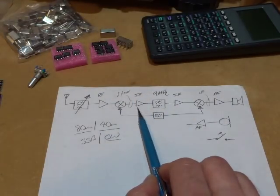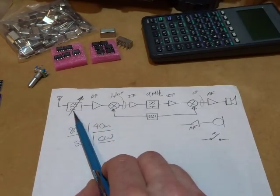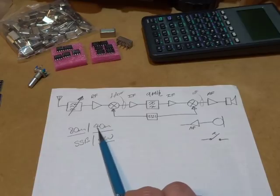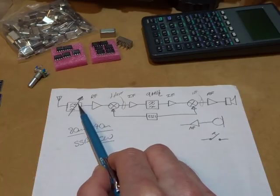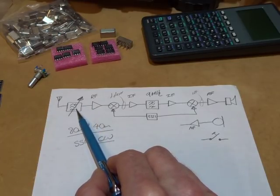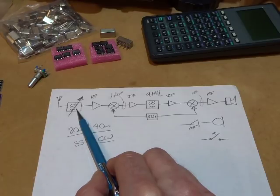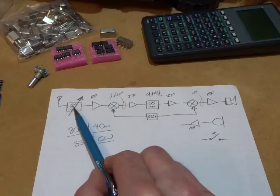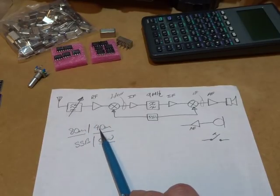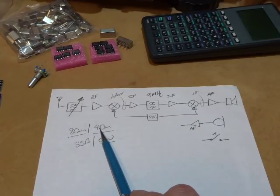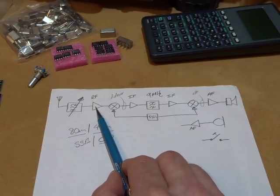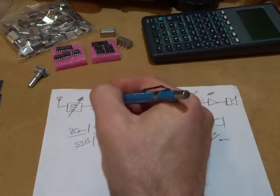Starting on the left hand side here, the bandpass filter will be a dual one - 80 and 40 meters. I'm quite keen to make that variable again, like I've done in the past. It seems to work really well with that dual ganged variable capacitor with the fixed inductors. For that RF amplifier, I might look to use a slightly higher gain transistor, so maybe the 2N5088.